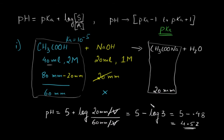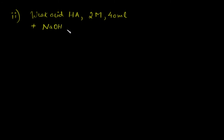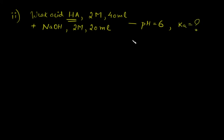I hope that is clear. Let's do a recap and move to the next question. In this similar type of question, we have a weak acid. The question gives us pH of the solution as 6, and we need to find the Ka of the weak acid.